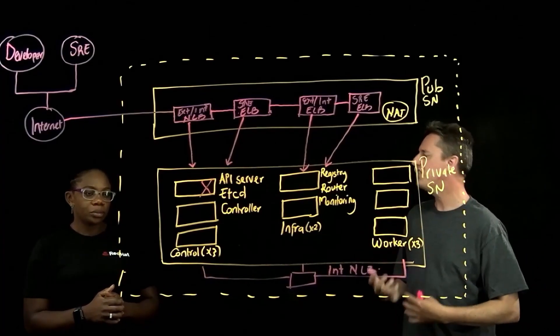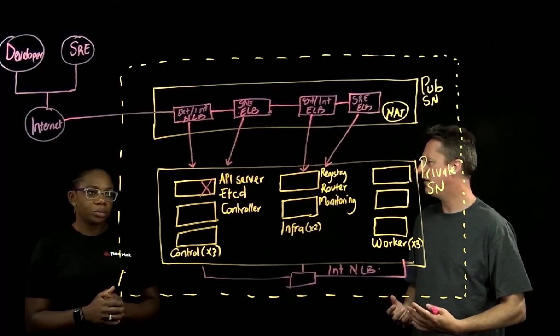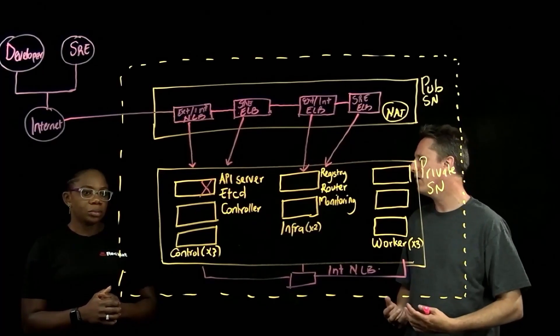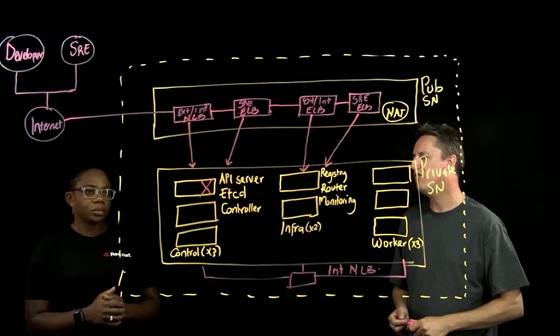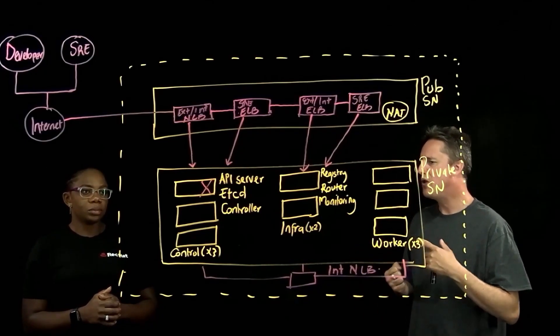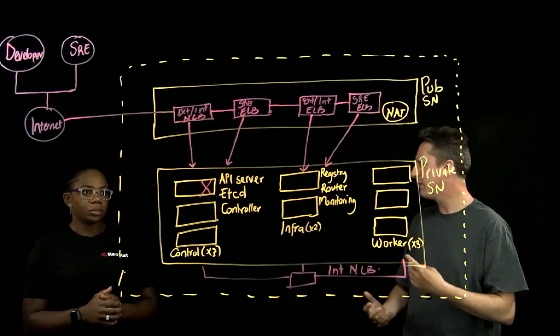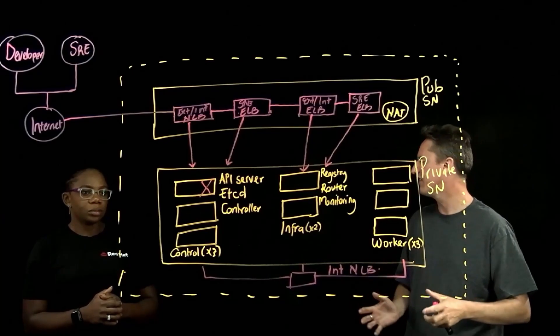So if there's a continuity element, is there also a quorum decision-making process that's being aided by there being three? So if one fails, there is no situation of there being a split brain, that failover is facilitated correctly?